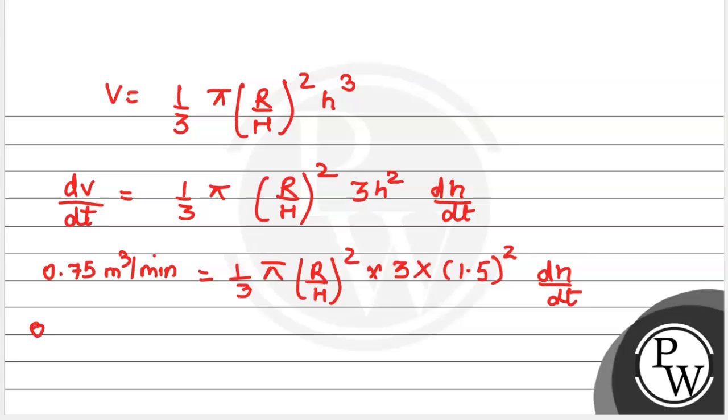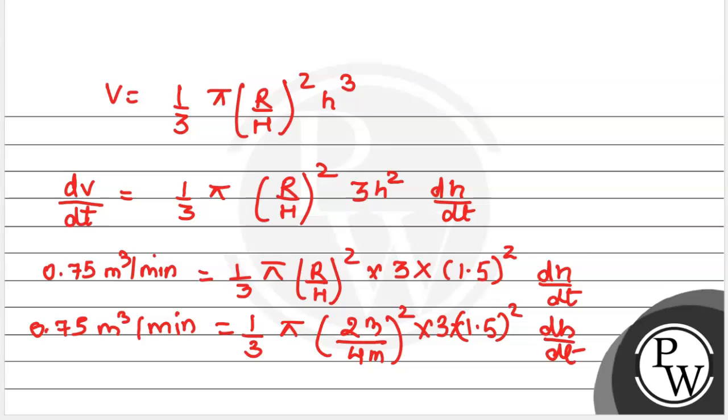So 0.75 equals 1/3 π (R/H)² times 3 times height 1.5 squared times dh/dt.